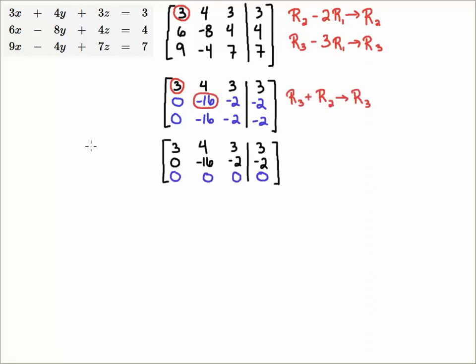Now I'm going to choose this minus 16 to be my pivot. And again some people might want to divide that minus 16 by minus 16 but look I see that this is a minus 16 below here so I know that if I just add these two rows together I will get a zero and I'll eliminate this entry here.